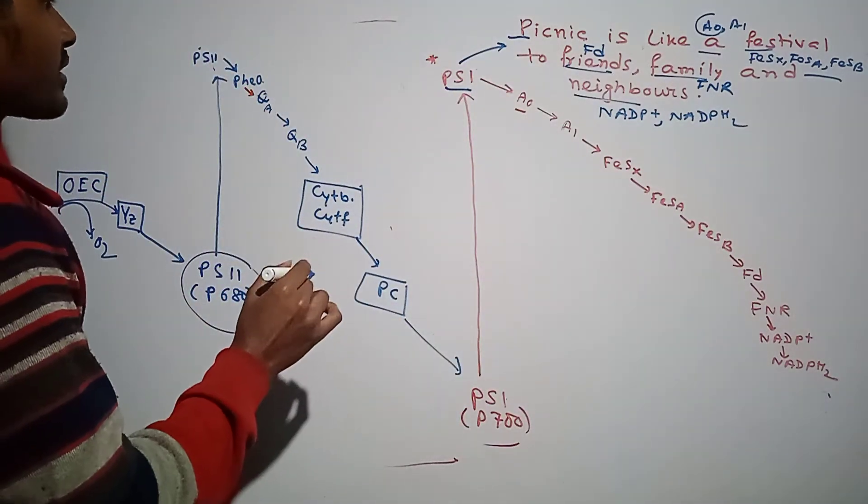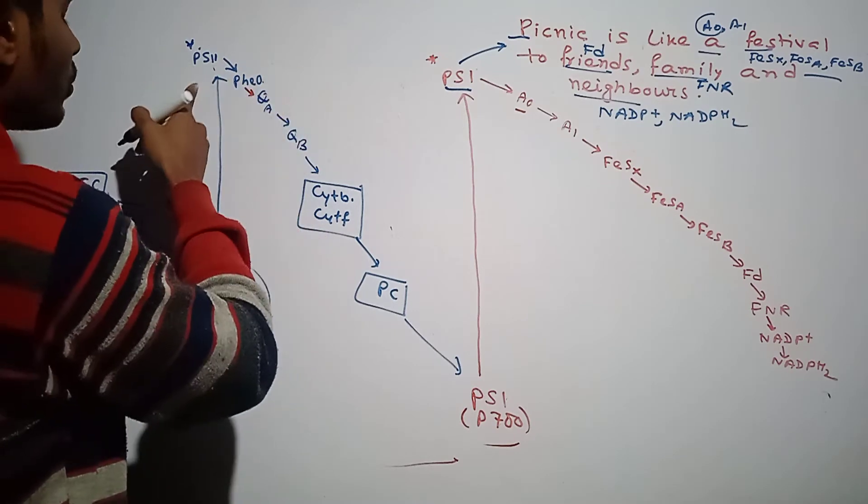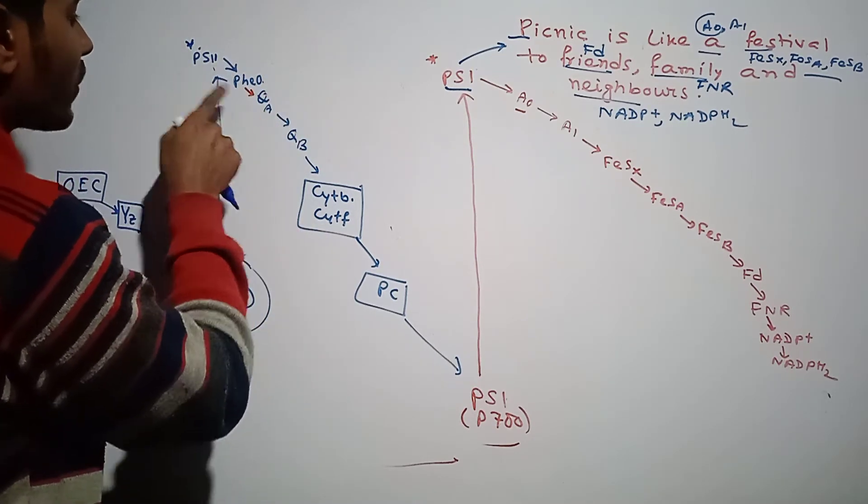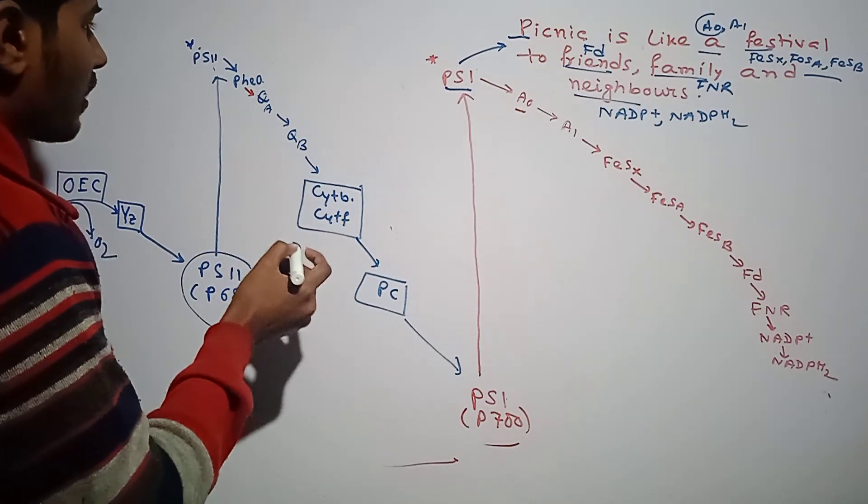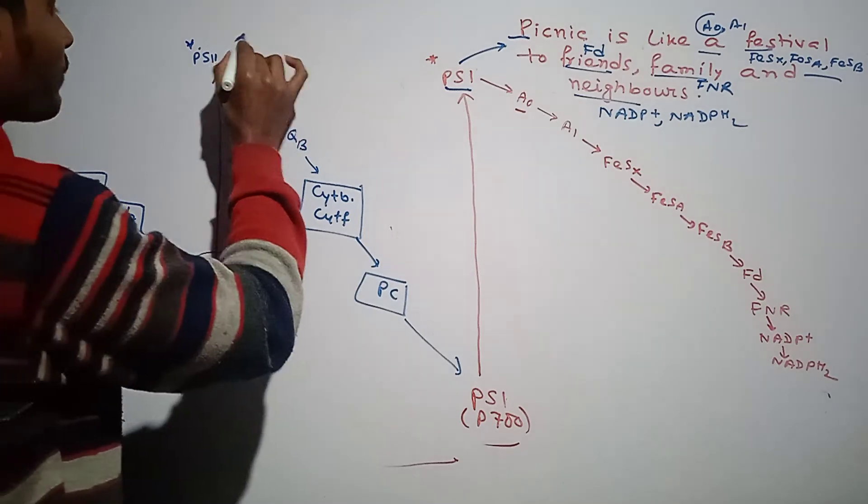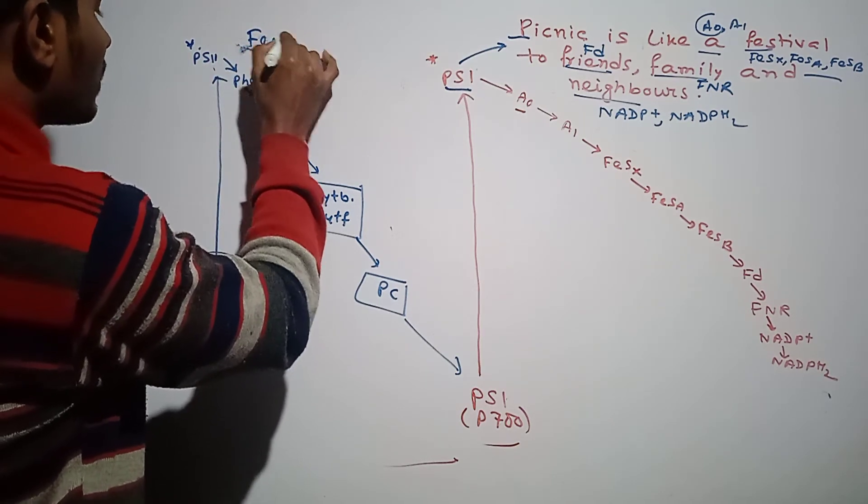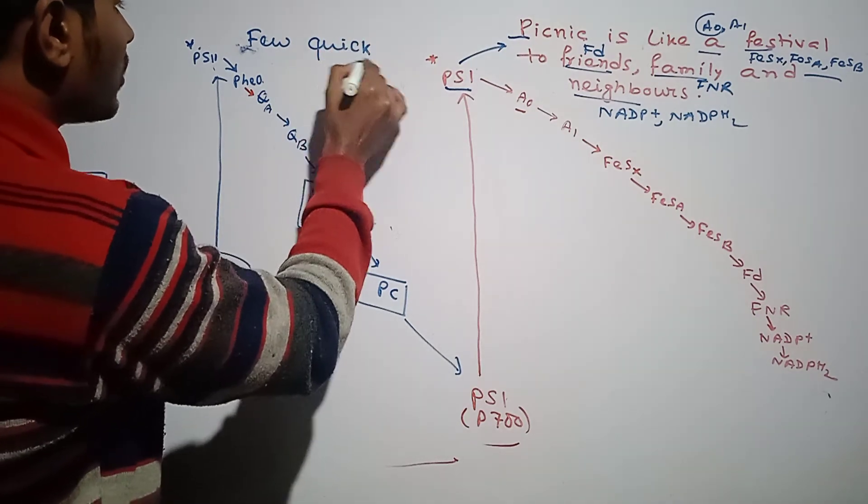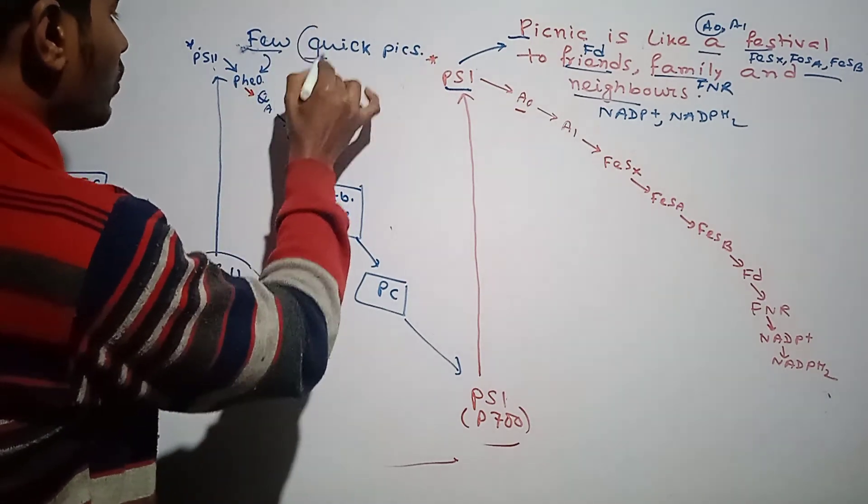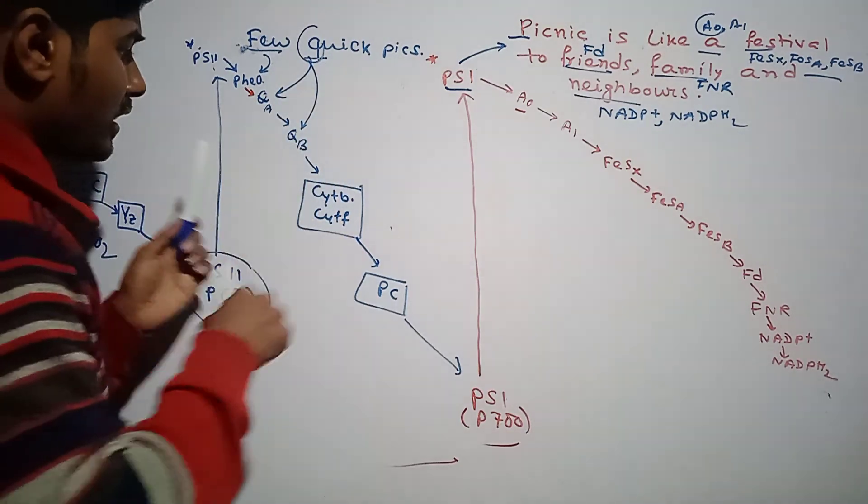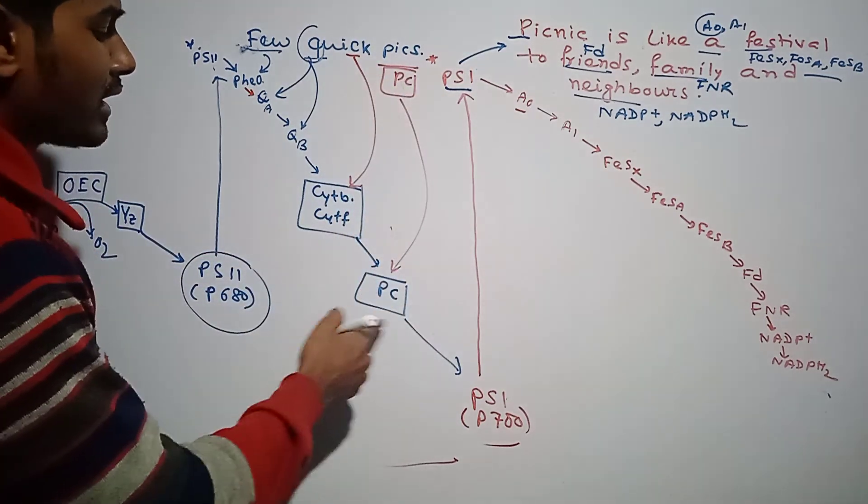How can we remember the electron carriers in their correct sequence for Photosystem 2? For this, suppose the electron that is released by Photosystem 2 is a person. When he goes from place to place, he clicks few quick pictures. Few means pheophytin, and quick means QA and QB. After that, we have C, which is cytochrome b6f complex, and pics means PC (plastocyanin). Then the electron goes to Photosystem 1.